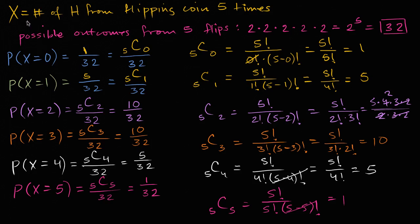In the last video, we set up a random variable x, which was defined as the number of heads from flipping a fair coin five times. We figured out the probability that our random variable could take on the value zero, one, two, three, four, or five. In this video, we will actually plot these and get a sense of this random variable's probability distribution.